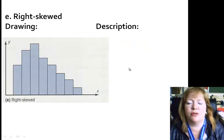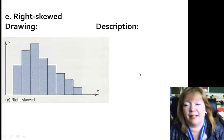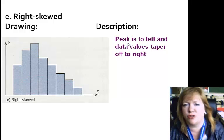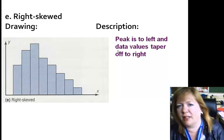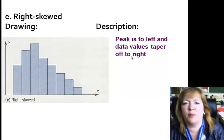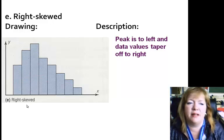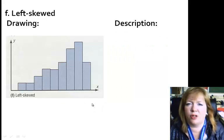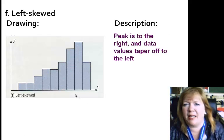Then you've got the right-skewed. Now this one doesn't make sense. Because if I look at this, all the data is over here on the left. But they call it right-skewed. It's exactly opposite of what you would think it would be. But think about where it tapers off. This tapers off to the right so they call it a right-skew. So peak is to the left and data values taper off to the right. And the left-skewed, the description here is the peak is to the right and data values taper off to the left.